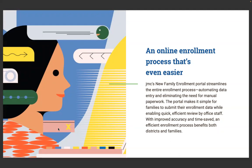JMC's new family enrollment portal streamlines the entire enrollment process, automating data entry and eliminating the need for manual paperwork. The portal makes it simple for families to submit their enrollment data, while enabling quick, efficient review by office staff. With improved accuracy and time saved, an efficient enrollment process benefits both districts and families. We're talking about new families that are brand new to your district.